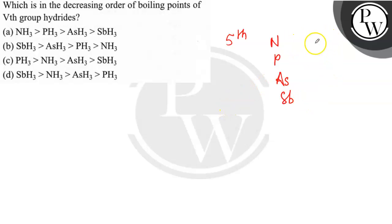We need to find the decreasing order of boiling point for these hydrides. We know that as we go down the group, size of the elements increases.